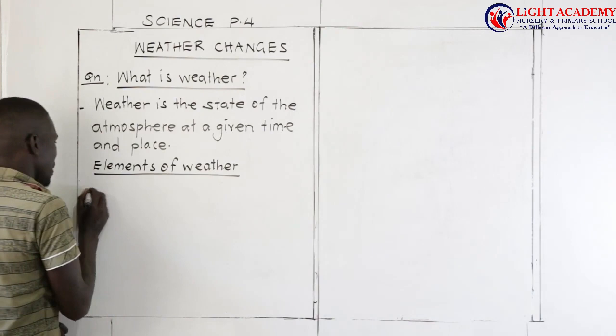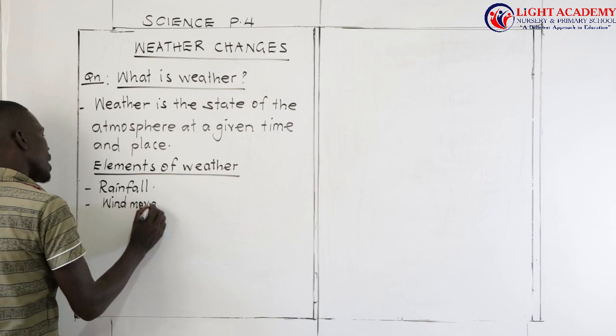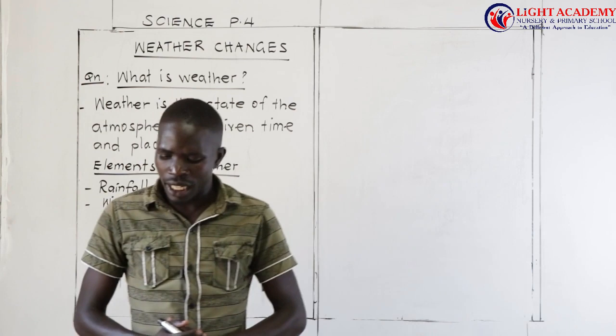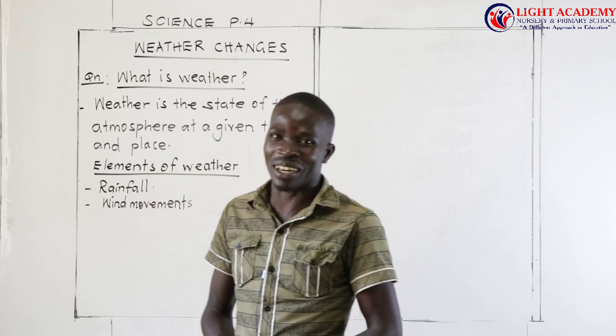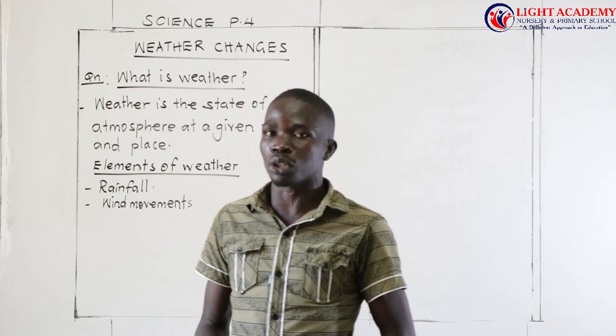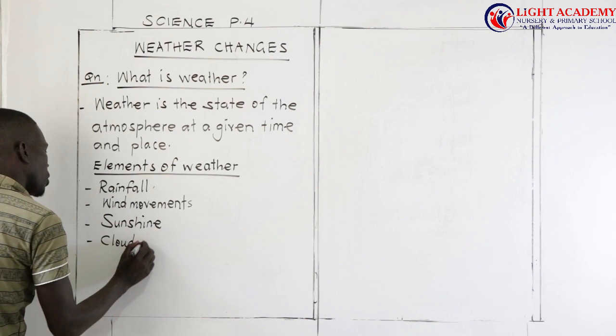One element of weather is what we call rainfall. Another element of weather is wind movements. Back in primary 4, we also have what we call sunshine as an element of weather.